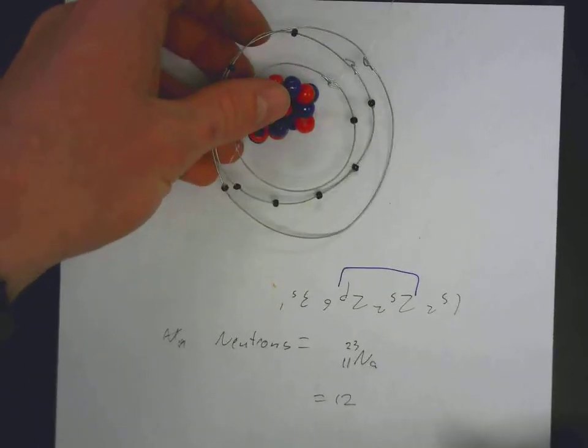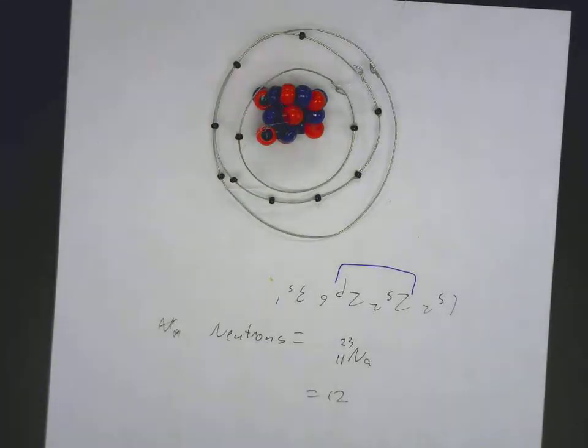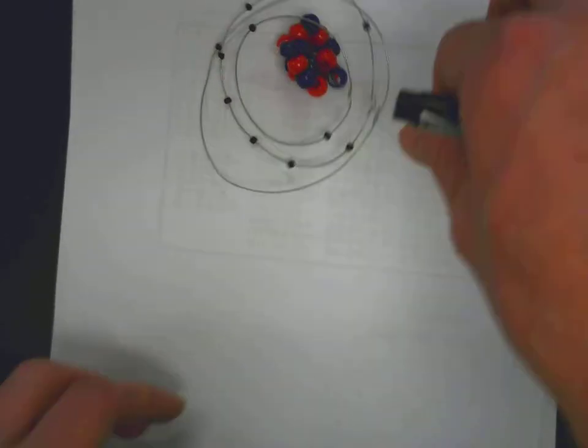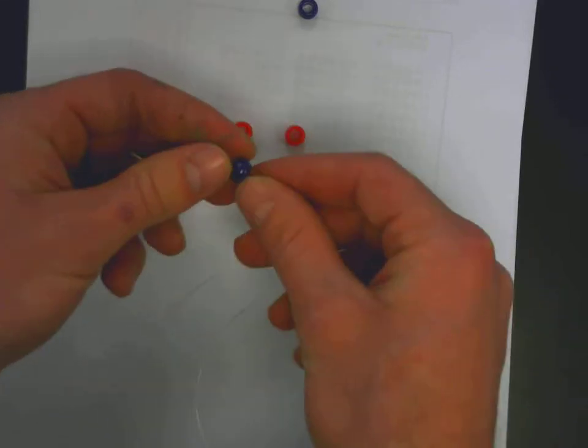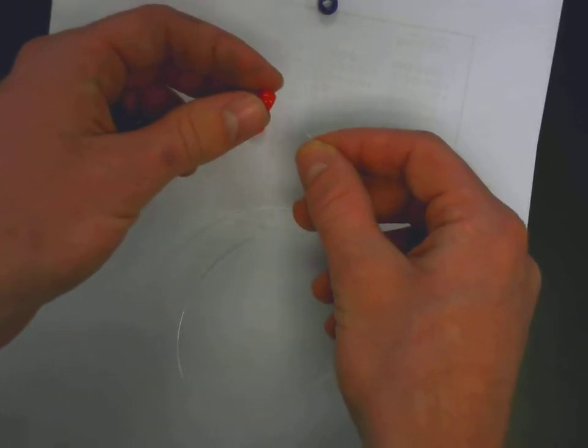Let's take a look at the process for making the model. We'll start off with the nucleus. Take some fishing line. We'll cut off a large piece of fishing line. Then we're going to string beads on there. Try to alternate them, but it doesn't have to be perfect. Alternate the colors.